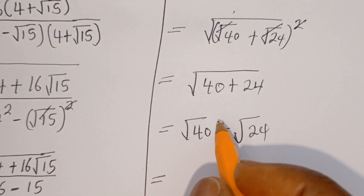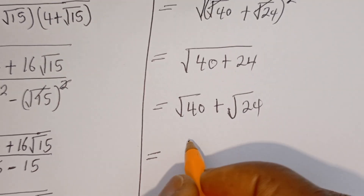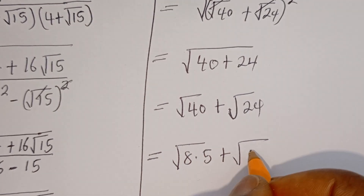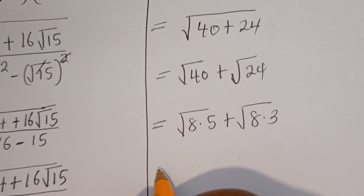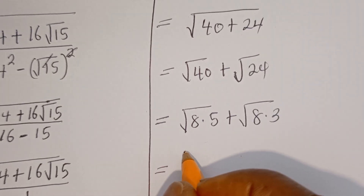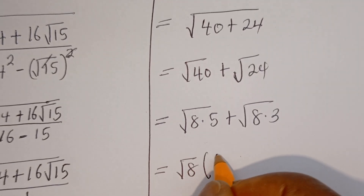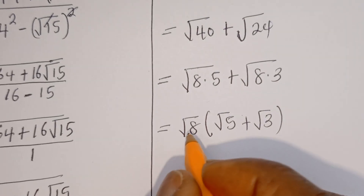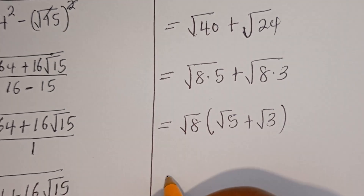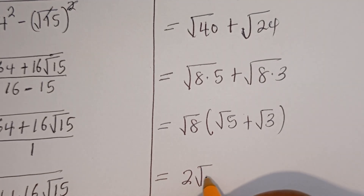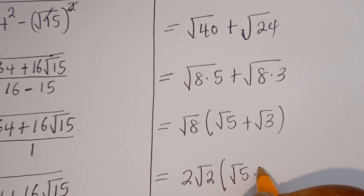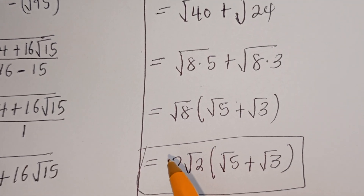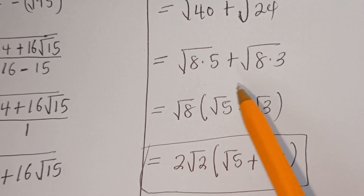This equals square root of 40 plus square root of 24, which is square root of 8 times 5 plus square root of 8 times 3. Factoring out root 8, we get root 8 times (root 5 plus root 3). Since root 8 equals root 4 times root 2, which is 2 root 2, the final answer is 2 root 2 times (root 5 plus root 3). I hope you enjoyed the video — please like, share, comment, and subscribe!